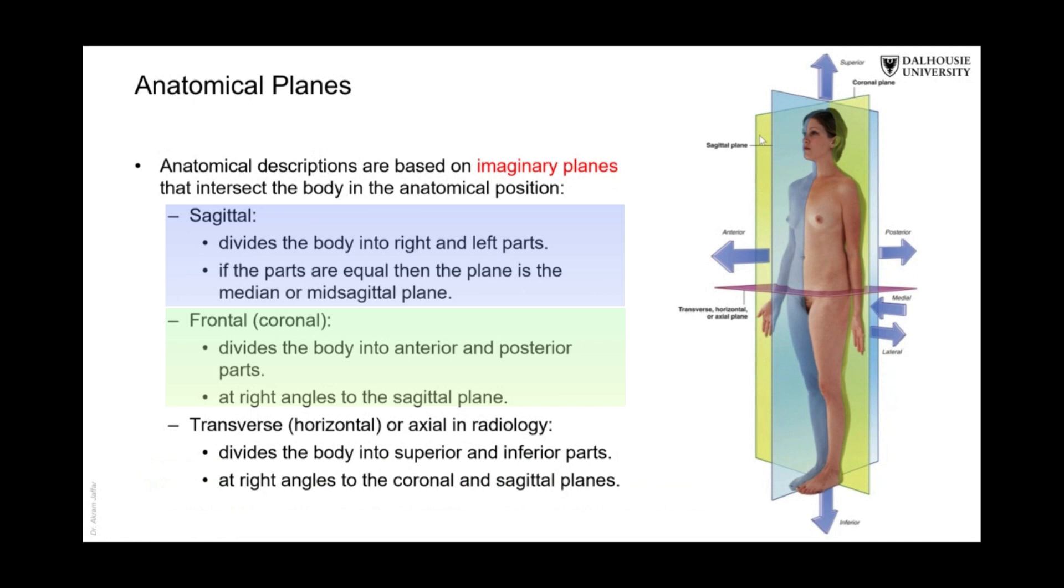I will show you the derivatives of the names of these planes, why it's called sagittal and coronal. So the coronal plane divides the body into anterior parts located in the front and posterior part located behind.